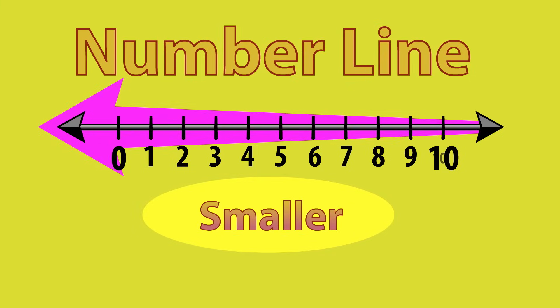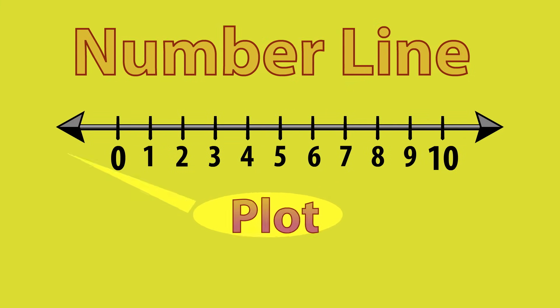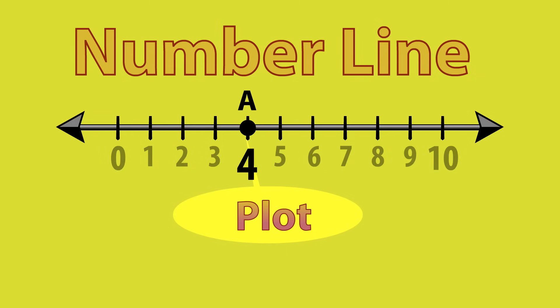Let's plot the point 4 on the number line. Draw a dot at the tick mark with the number 4 below.